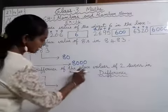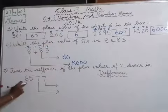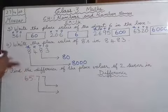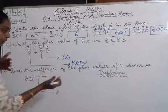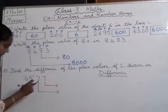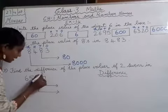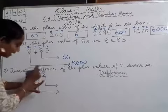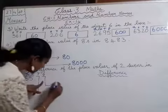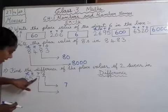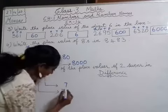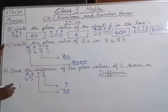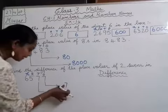Question number 5 — find the difference of the place values of two 7s in 6577. We have to subtract. Writing ones, tens, hundreds, thousands: the first 7 is in ones place, so its place value is 7. The second 7 is in tens place, so its place value is 70. We know these are the place values of the two 7s.